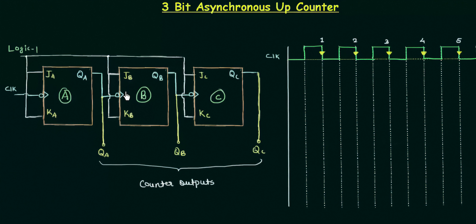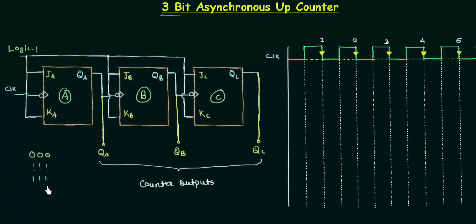For example, if it is at one, then for the next clock pulse it will count two, then three, then four. By three-bit, we will count from 000 all the way to 111, because the maximum possible count in a three-bit system is seven — it starts from zero and ends at seven. So we have to study the three-bit asynchronous up counter.